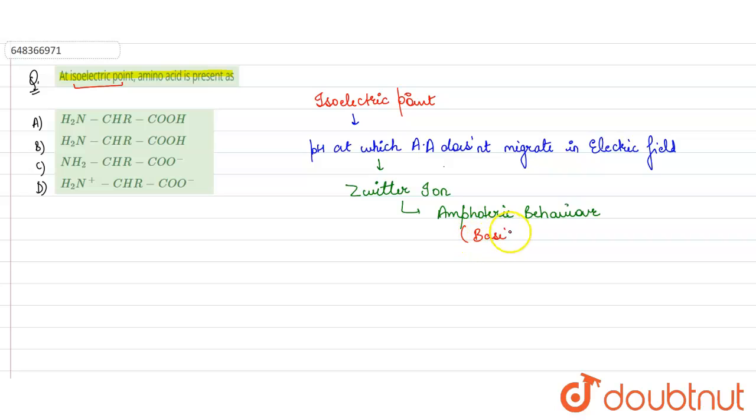...basic as well as acidic nature. Now in zwitterion condition, carboxyl, carboxylic acid, and amino group both are present. It becomes like this...